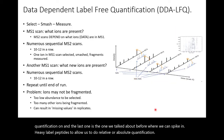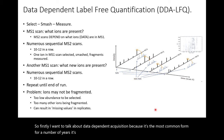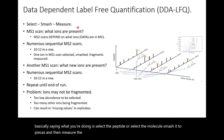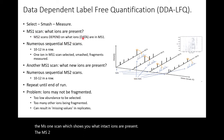I want to talk about data dependent acquisition, which is the most common form and has been around since the mid-1990s. You can simplify it by saying: select the peptide or molecule, smash it to pieces, then measure the mass of the fragments. It occurs in two steps — the first is the MS1 scan which shows what intact ions are present, and the MS2 scan depends on what is in the MS1 scan — that's why it's called data dependent.